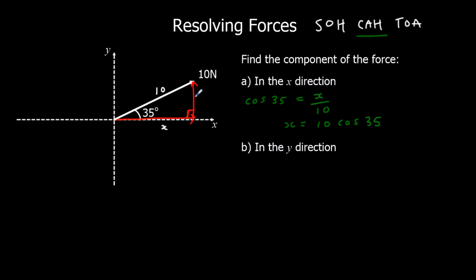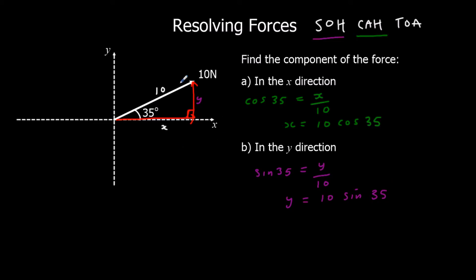For the y-direction, we've got the hypotenuse and the opposite. So sin 35 equals opposite over hypotenuse, so y equals 10 sin 35. So we can say in the x-direction we've got 10 cos 35, and in the y-direction we've got 10 sin 35. This is a pattern you're going to see over and over again: when we've got the adjacent, that's cos; when we've got the opposite, that's sin.